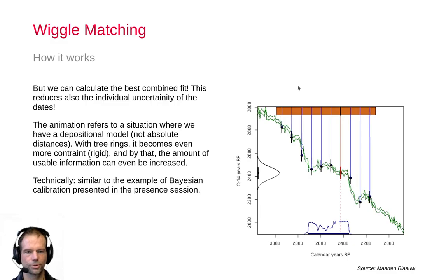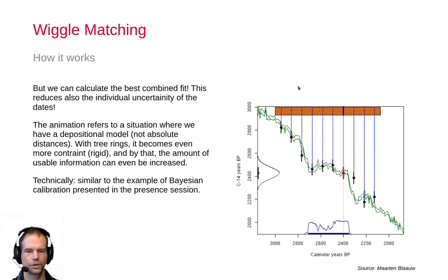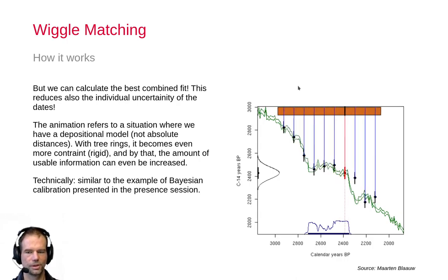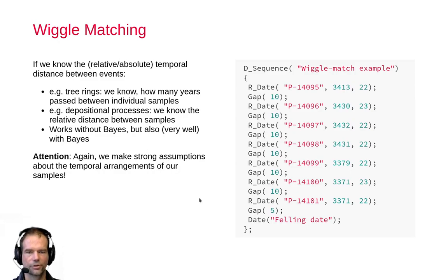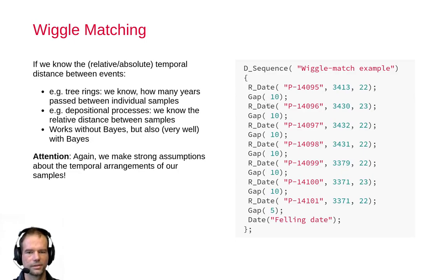Wiggle matching can give very precise dating — up to five years, for example — where C14 calibration alone would give you 100 or 200 years of possible distribution for the individual dates. In OxCal, this uses a Sequence, with individual C14 dates and Gap commands between them — for example a gap of 10 years reflecting the count of individual tree rings. I will show you how this works in a technical video.